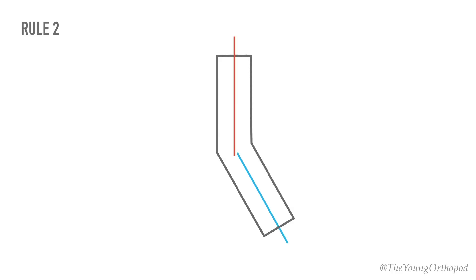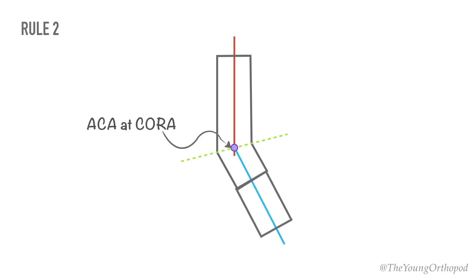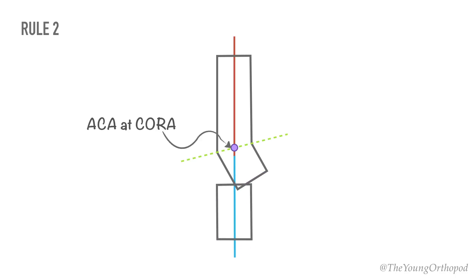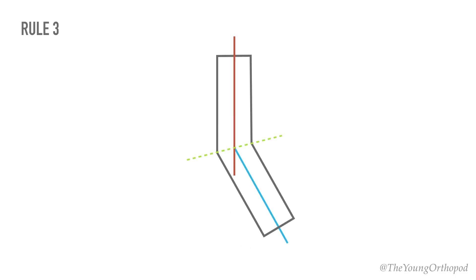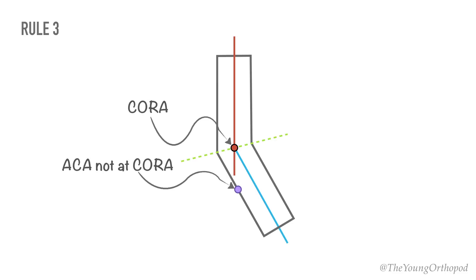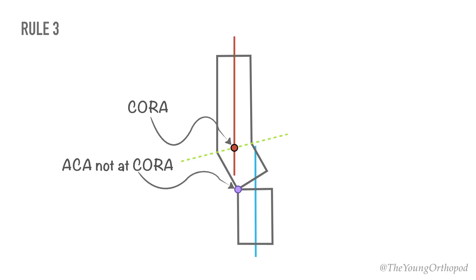If the ACA passes through a CORA but the osteotomy does not pass through this point, the bone ends at the osteotomy level will both angulate and translate relative to each other. If the ACA does not pass through a CORA on the bisector, the proximal and distal axes of the bone will be parallel but translated to each other when the magnitude of angulation is corrected.